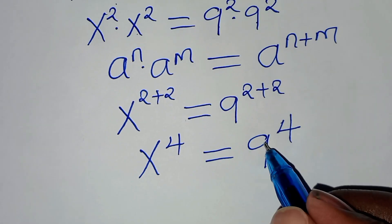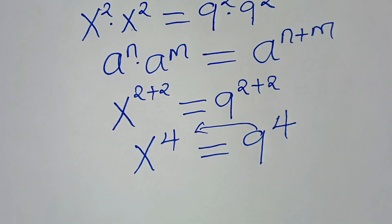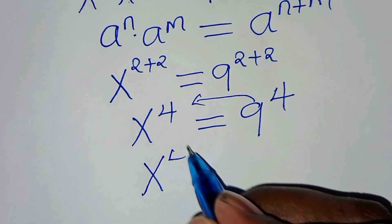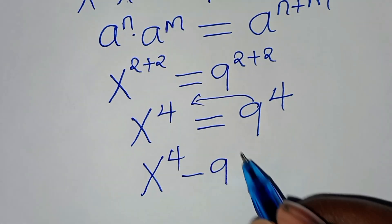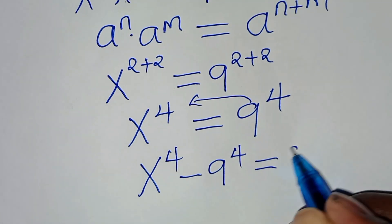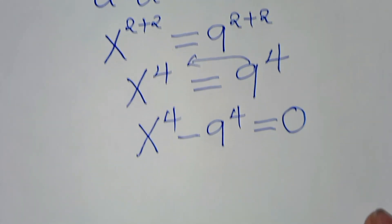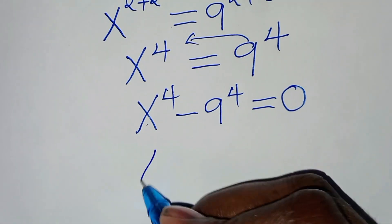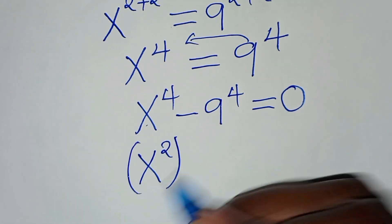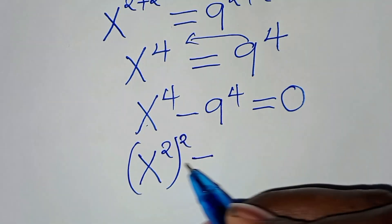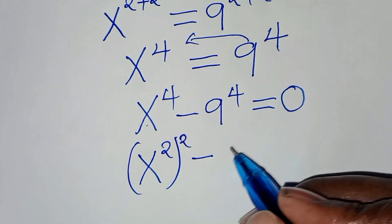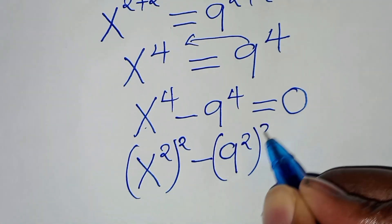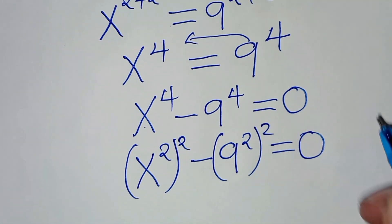The next step is to take 9 to the power of 4 to the left hand side, so that now we have x to the power of 4 minus 9 to the power of 4, this is equal to 0. We can express x to the power of 4 as x to the power of 2, raised to power 2. This is minus 9 to the power of 2 raised to power 2, equal to 0.